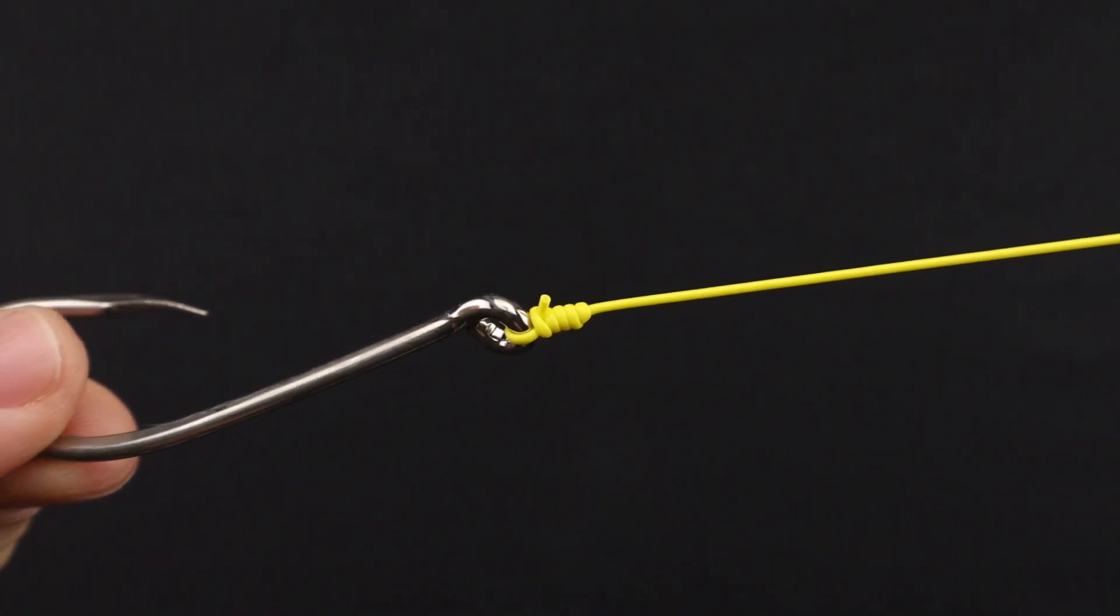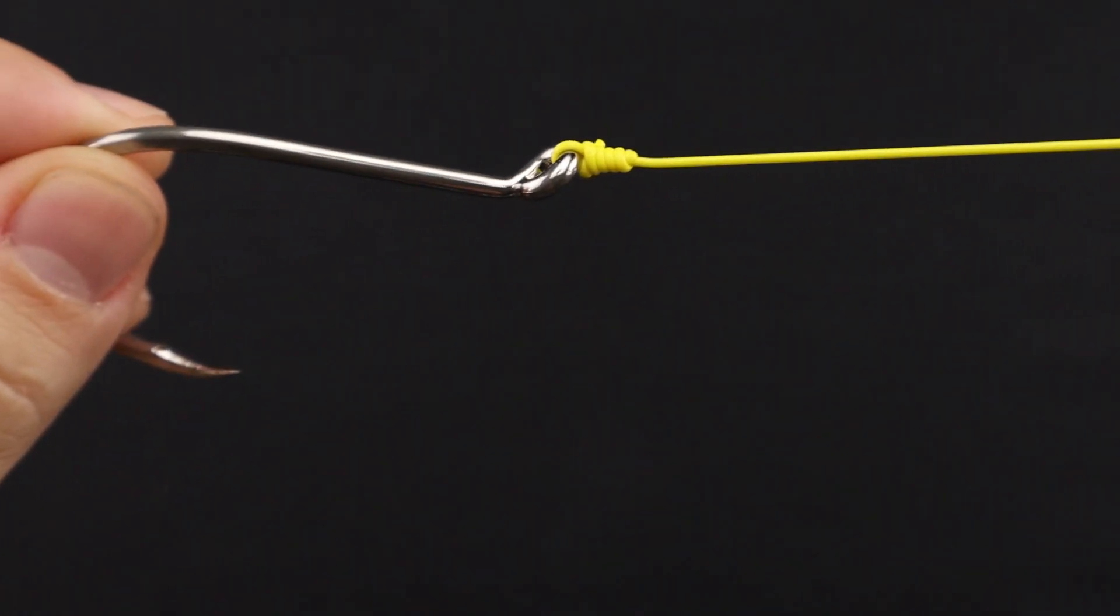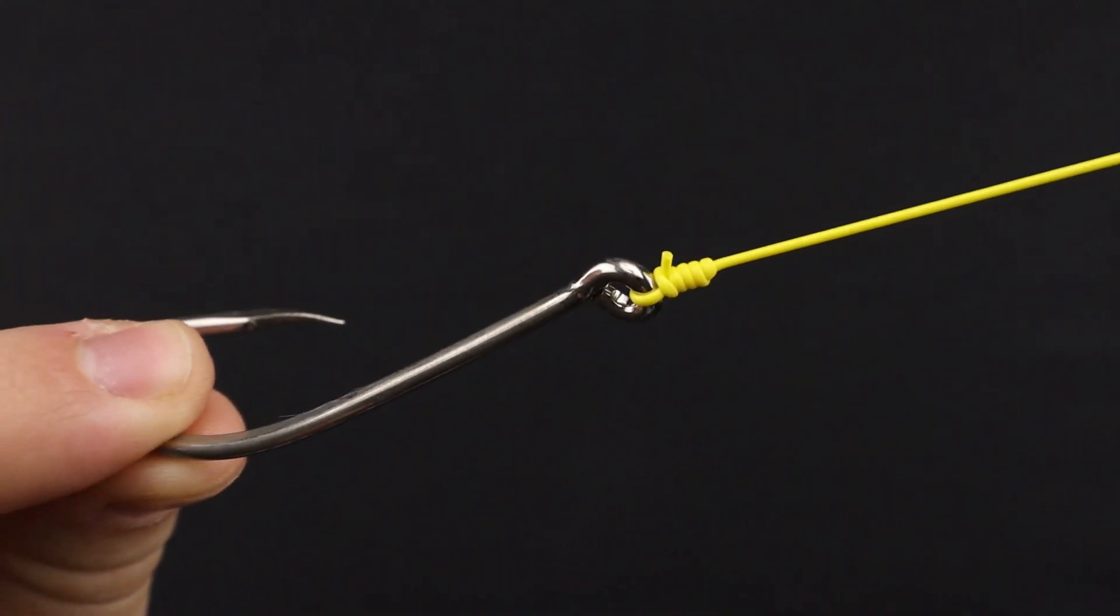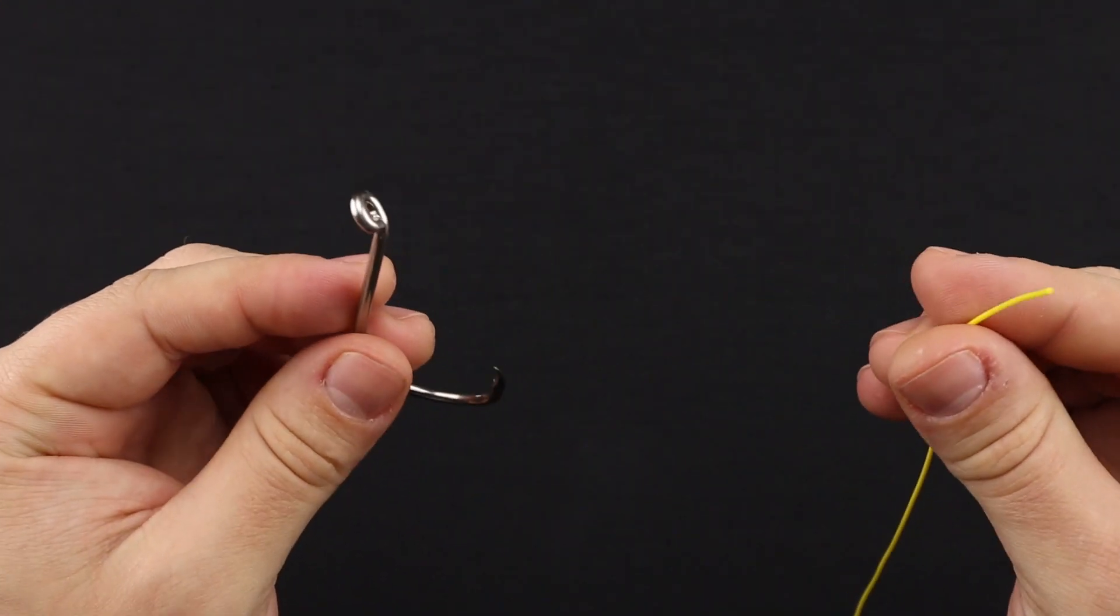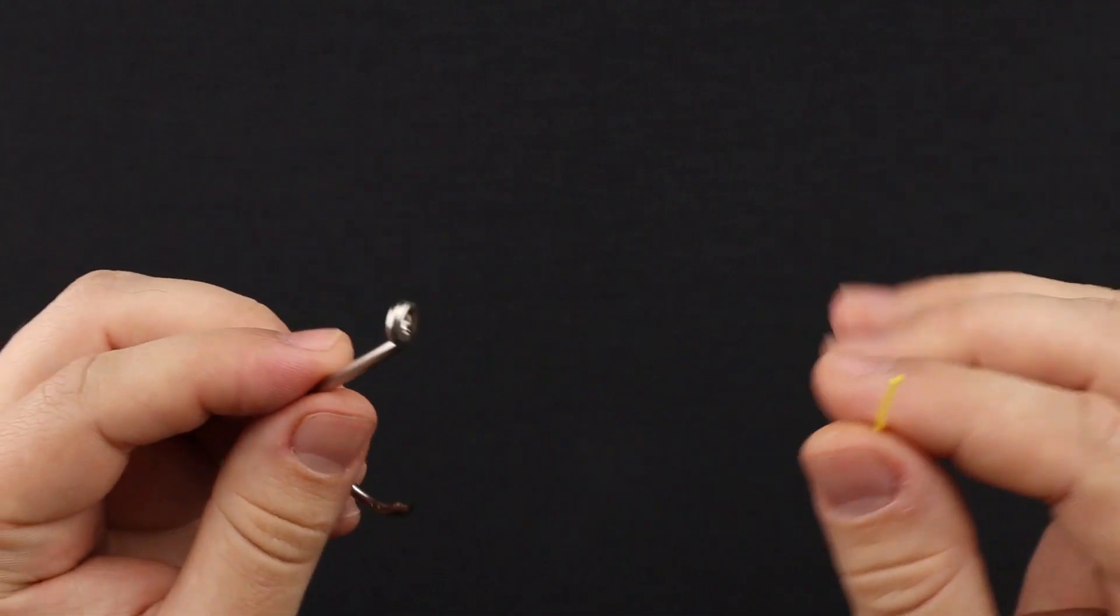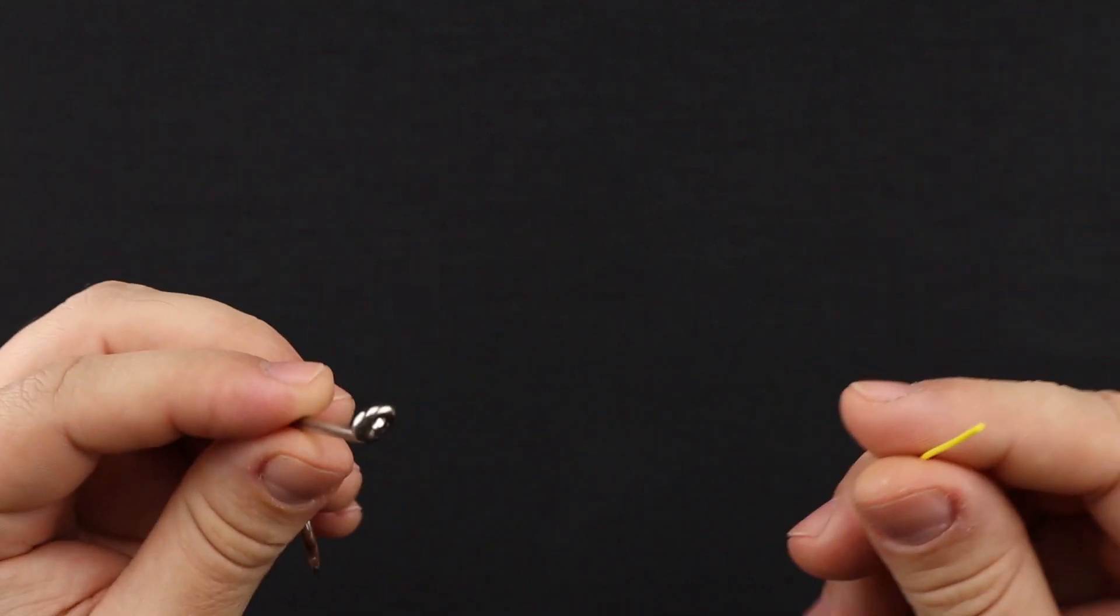Hello everybody, welcome back to Fish That Won't Quit. Today we're gonna go over how to tie the improved clinch knot. Stay tuned. Alright, so the improved clinch knot, one of my favorite knots. It's also one of the first fishing knots I've ever learned and I still use till this day because it's strong and it's easy to tie.